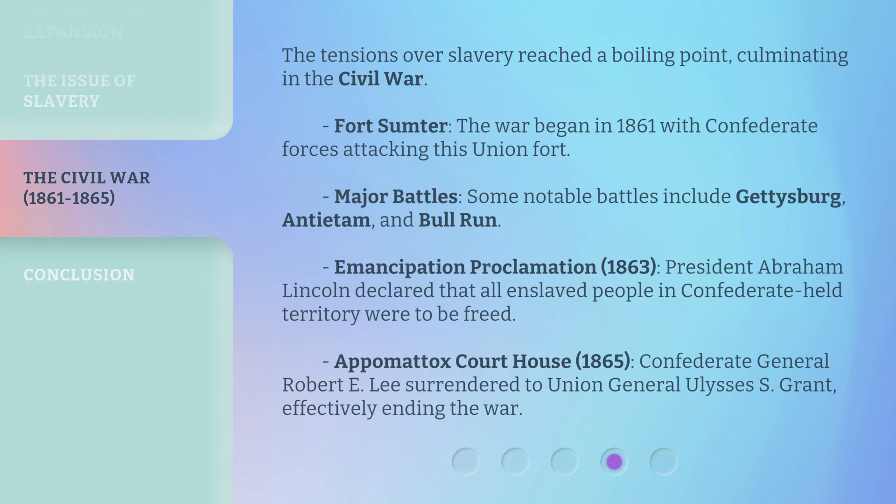The tensions over slavery reached a boiling point, culminating in the Civil War. Fort Sumter: the war began in 1861 with Confederate forces attacking this Union fort. Major battles: some notable battles include Gettysburg, Antietam, and Bull Run. Emancipation Proclamation, 1863: President Abraham Lincoln declared that all enslaved people in Confederate-held territory were to be freed. Appomattox Courthouse, 1865: Confederate General Robert E. Lee surrendered to Union General Ulysses S. Grant, effectively ending the war.